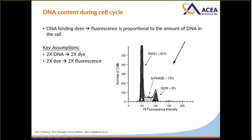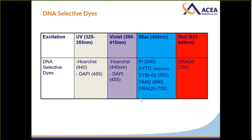When it comes to DNA analysis, there are many dyes available. When choosing one, you need to understand what is available on your flow cytometer — specifically which lasers and emission channels are available. For UV and violet lasers, Hoechst and DAPI are options. For the blue laser, you have PI, SYTO, SYBR Green, 7AAD, and DRAQ2. For the red laser, there is DRAQ5. The numbers in brackets correspond to the optimal emitted wavelength for each dye.